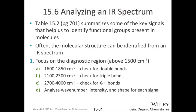To summarize reading an IR spectrum: focus on the diagnostic region. The fingerprint region is usually a huge mess of peaks without a lot of meaningful information. Focus above 1500 wave numbers. Break it down into sections: a section for double bonds, a section for triple bonds, and a section for bonds of things to hydrogen. Other single bonds will be down in the fingerprint region where we can't get much useful information.